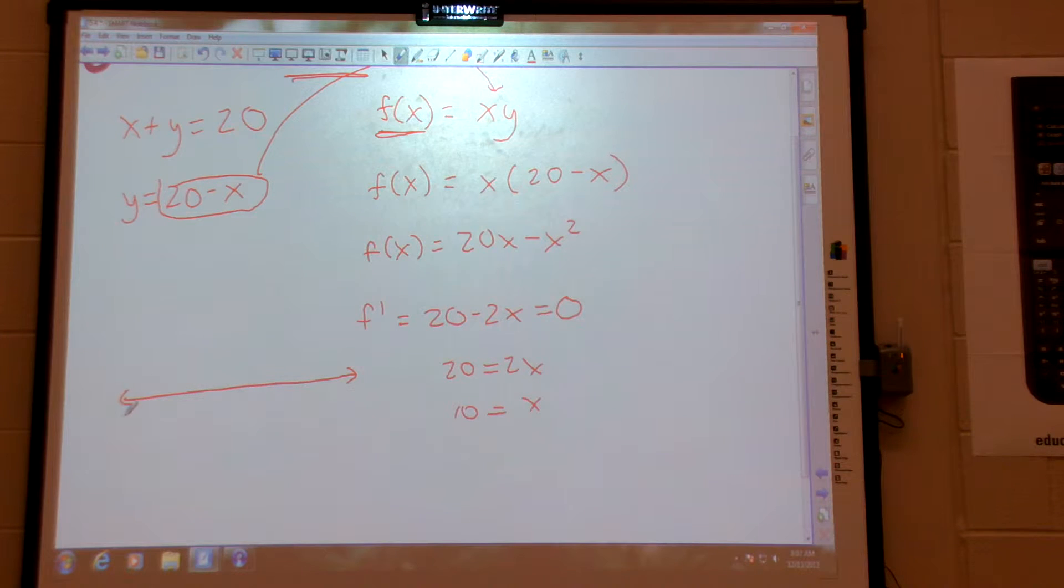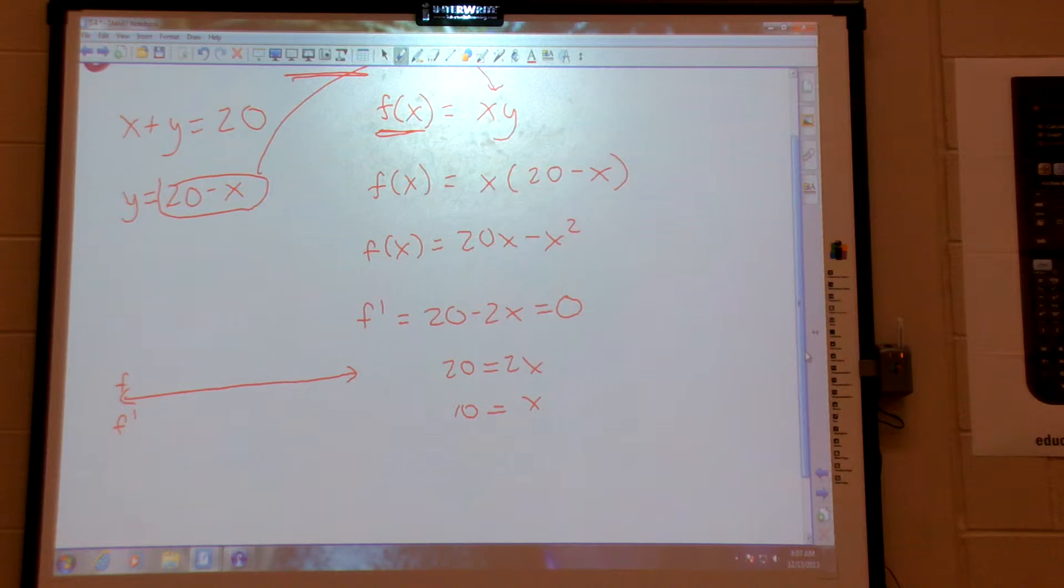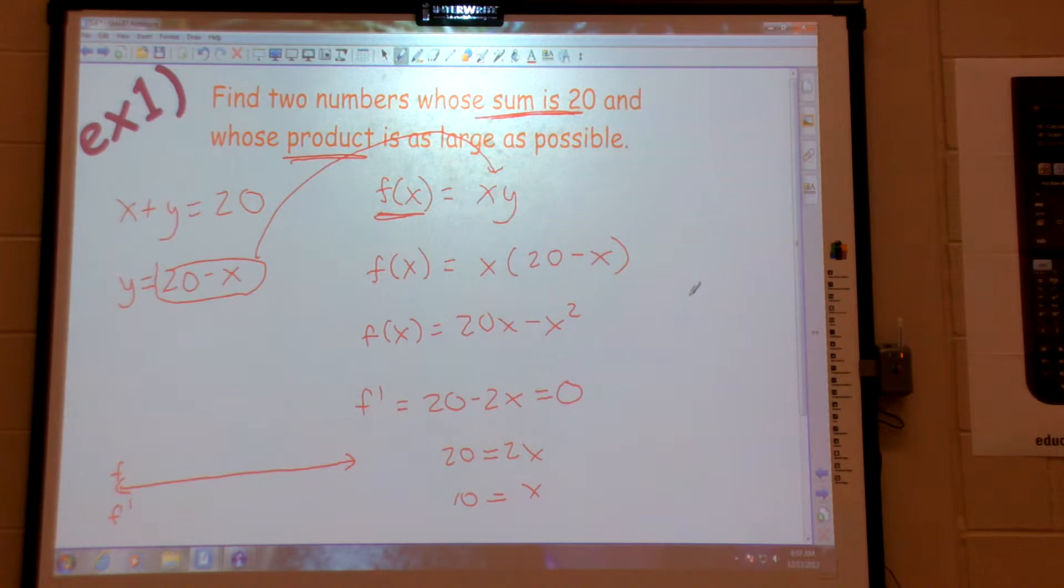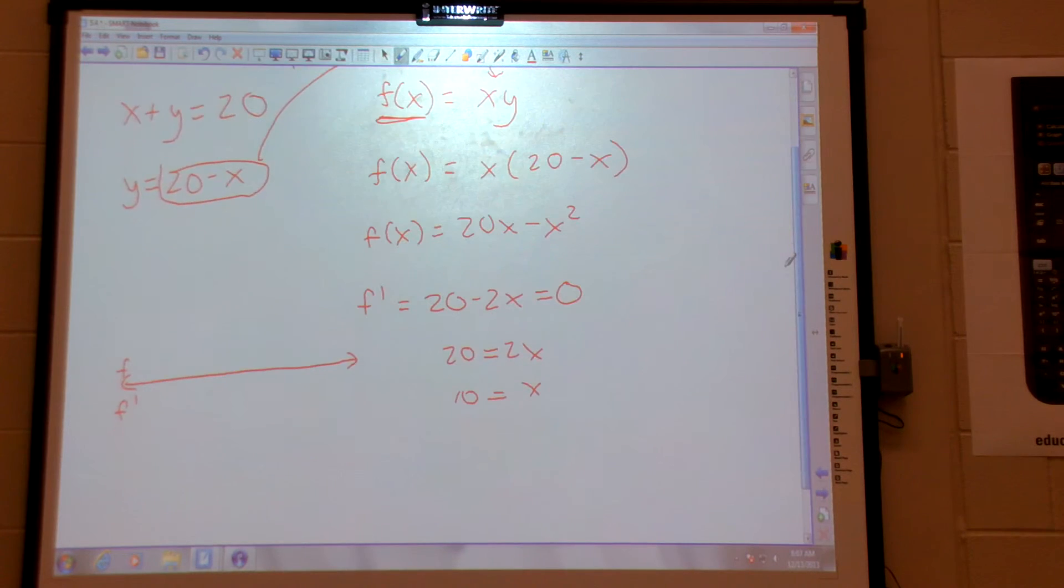Here's where a lot of you, with the exception of maybe 2, 3 people, didn't take into account the quiz. Do I have endpoints? 0 and 20. If they have to add it to be 20, they have to be at least 0, no more than 20, right? So I have endpoints of 0 and 20. Do not go past that.